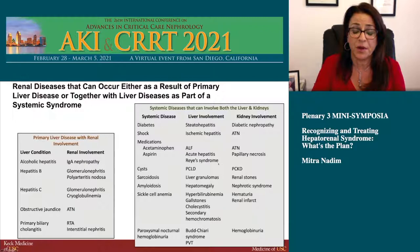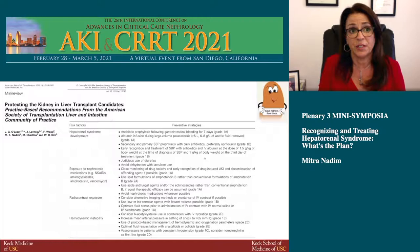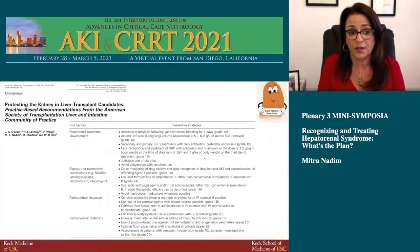Regarding treatment, as Benjamin Franklin said, an ounce of prevention is worth a pound of cure. Our focus initially should be preventing these patients from developing AKI or hepatorenal syndrome. Preventive strategies include albumin infusion, avoiding excessive diuretics, avoiding dehydration, reviewing medications for nephrotoxicity, minimizing contrast exposure in high-risk patients, and keeping hemodynamics stable.